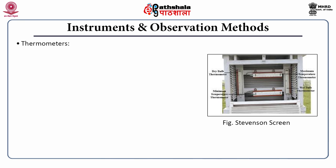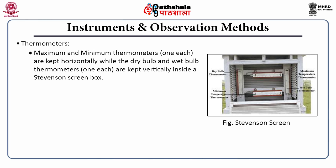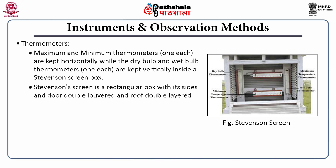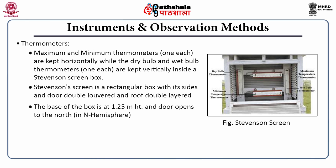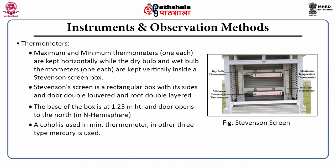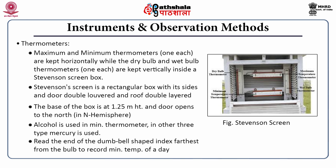Next comes thermometers. There are four types: maximum, minimum, dry bulb, and wet bulb thermometers, all kept inside the Stevenson screen. The Stevenson screen is a rectangular box with sides and door double-louvered and the roof double-layered. The base of the box is at 1.25 meters height and the door opens to the north in the northern hemisphere, to avoid exposure to direct sun. In all thermometer types, mercury is used as the sensing element, but in the minimum thermometer, alcohol is used. A dumbbell-shaped index inside the minimum thermometer indicates the minimum temperature — read the end furthest from the bulb.